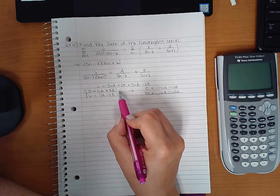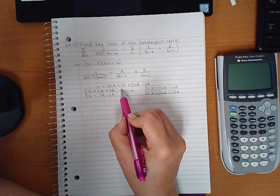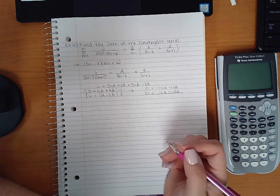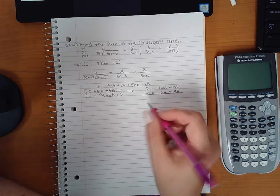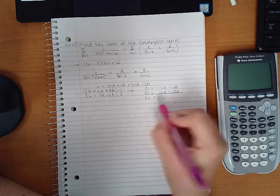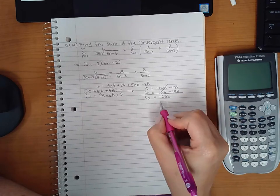Now instead of multiplying by negative 2, I could have multiplied this one by 5 and this one by positive 3, because these already had opposite signs. It doesn't matter which one you choose to eliminate as long as you eliminate one of the variables.